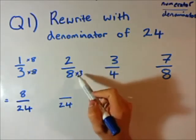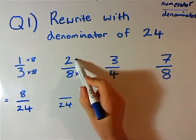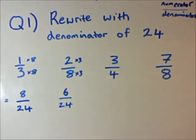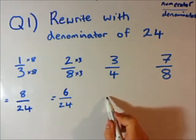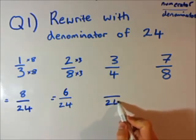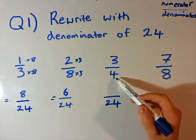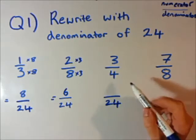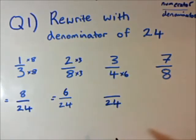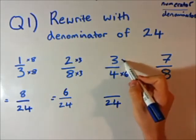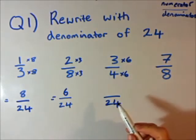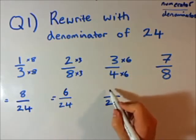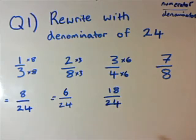Remember, the trick is whatever you do at the bottom, you also do at the top. So I'm going to times the top by 3. So it's going to be 6 over 24. Now let's look at the third one. What do I have to times 4 by to get 24? Well, 4 times 6 is 24. So I'm going to times the top by 6 as well. 3 by 6 is 18. So that's 18 over 24.